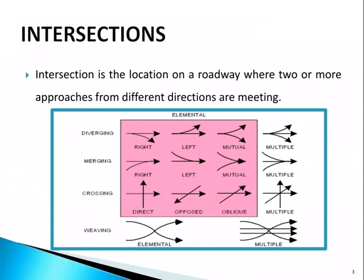In a weaving type intersection, traffic will move from right to left and left to right, and multiple weaves are also possible. In this type of intersection, approaches will move like waves. All arrangements are shown in the image.